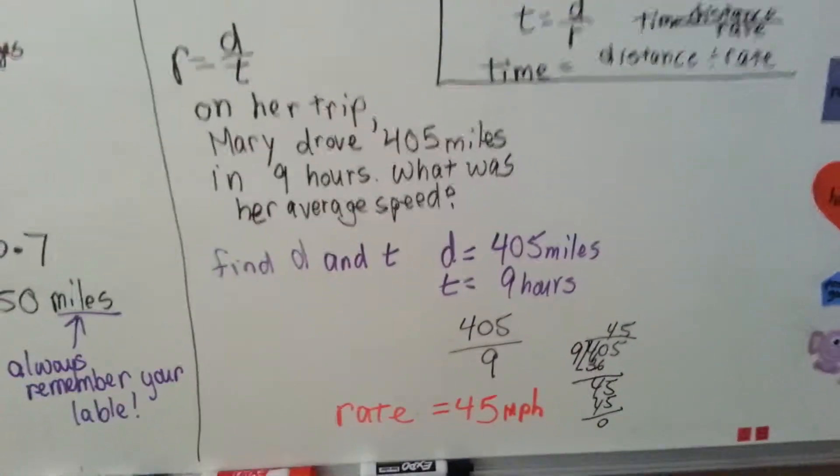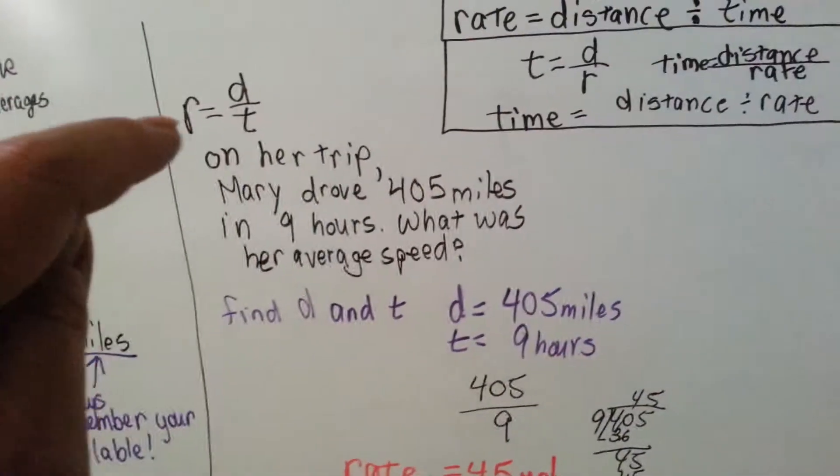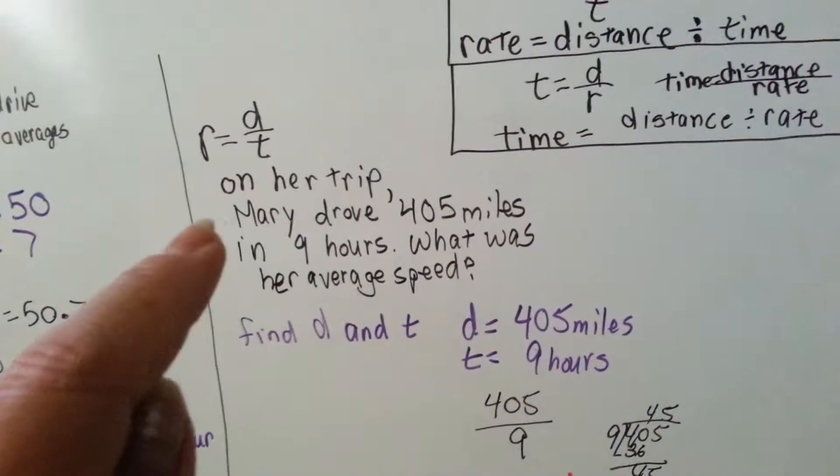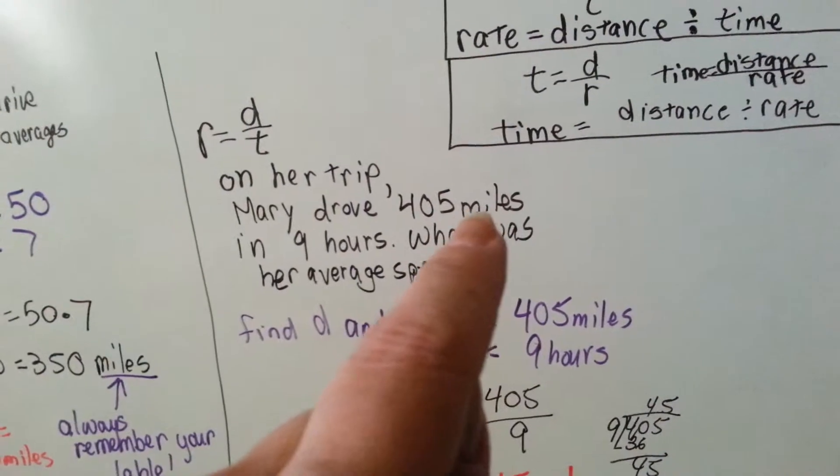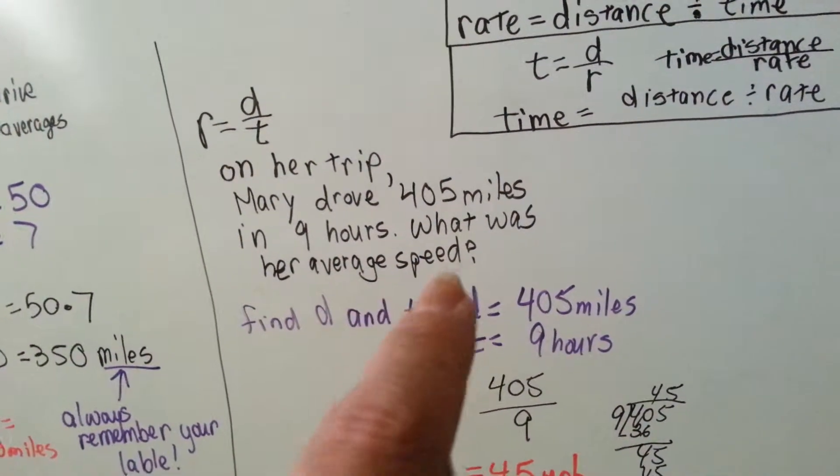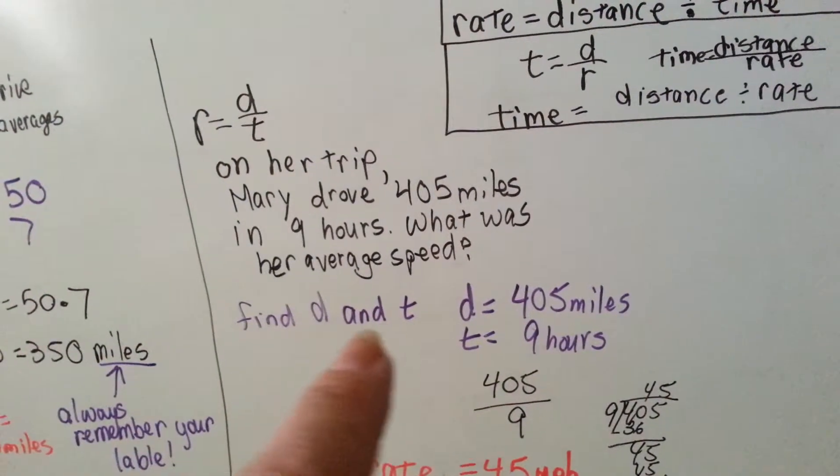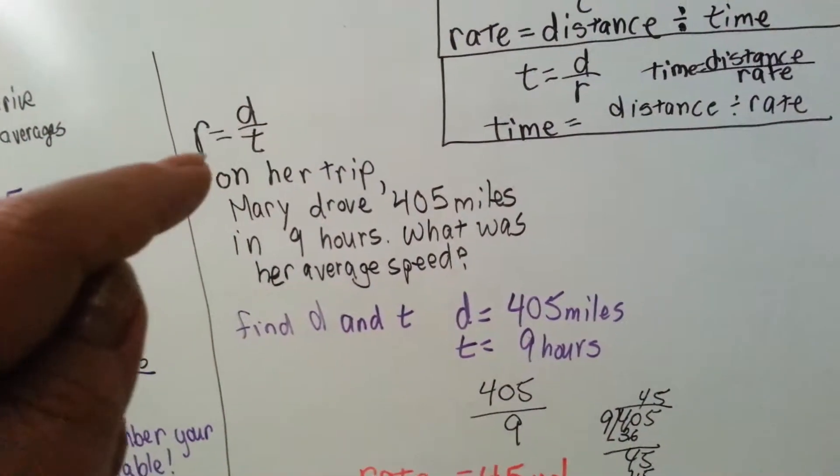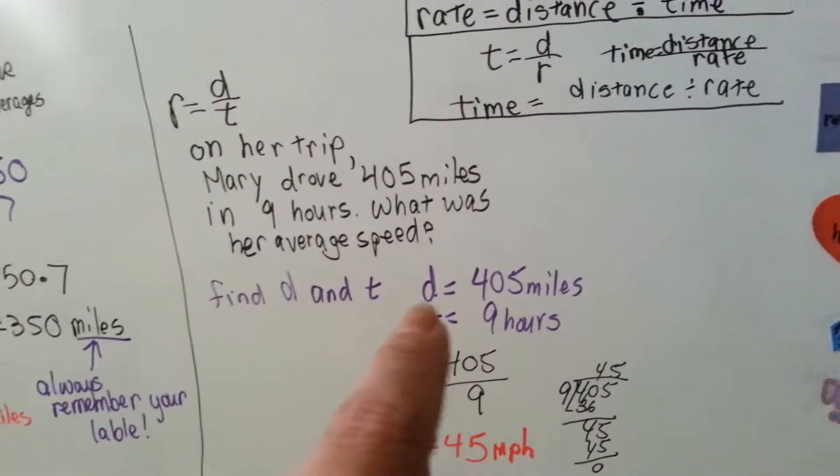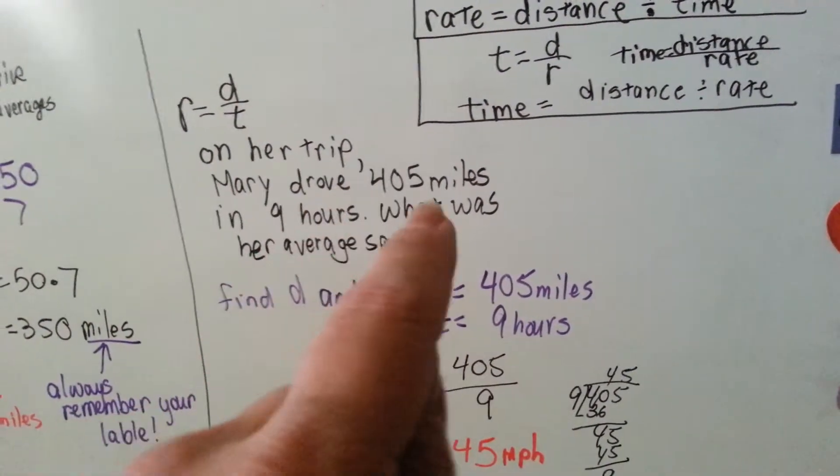Let's look at this one. Now we're going to do the rate. We need to find the rate, so we're going to divide the distance by the time. On her trip, Mary drove 405 miles in nine hours. What was her average speed? So now we need to find the D and the T so that we can divide them to find the R. Well, the distance she went was 405 miles.